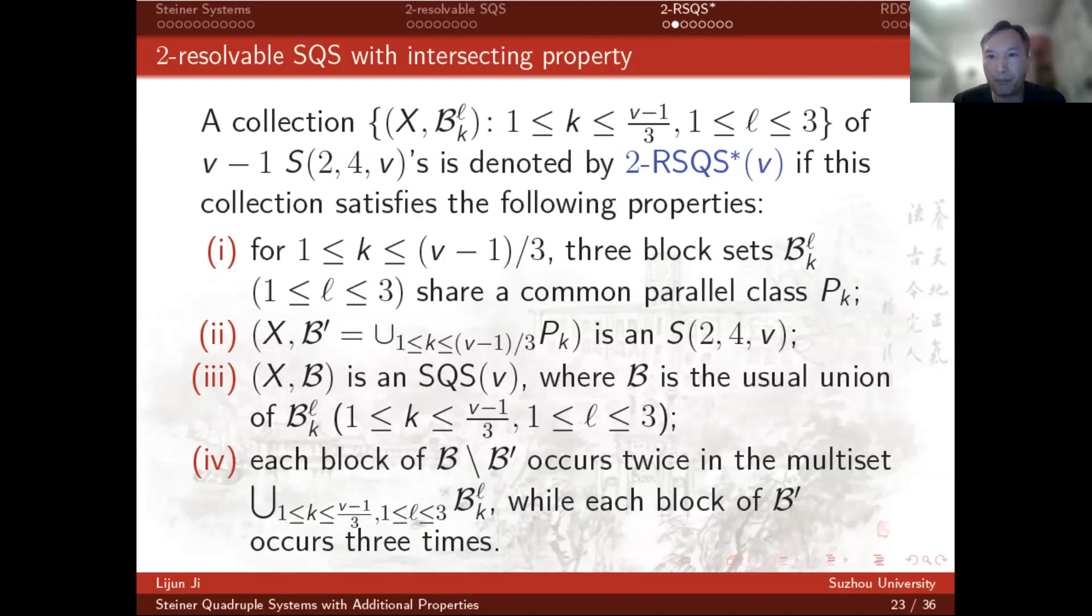The blocks B_k, B_l share a common parallel class P_k, and the union of this common parallel class and the union of B_k, B_l forms the block set of SQS(v). Also, each block not containing v prime occurs twice in the multiset B_k, B_l, but each block containing v prime occurs three times.